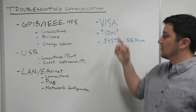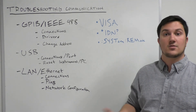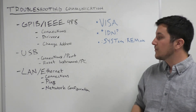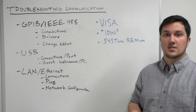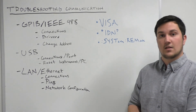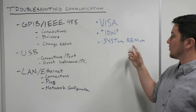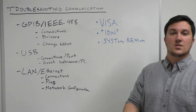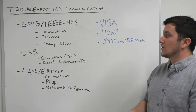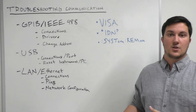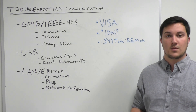This will tell you if you're getting an identification string from the instrument and if your PC and instrument are actually communicating. If you're still finding that your instrument is in local mode and not in the remote command set, you can send a system remote command and that will force the instrument into remote mode. If you continue to have any further issues with communication, you can contact us at Tektronix Technical Support — we'd be happy to help.